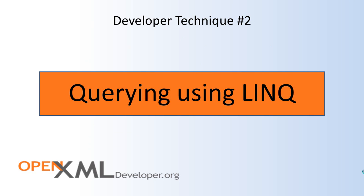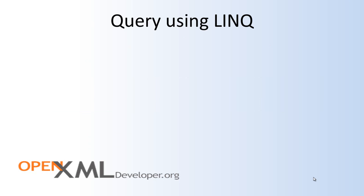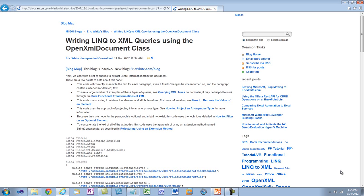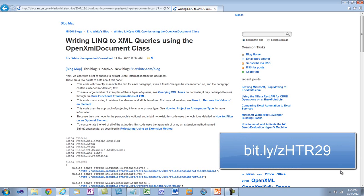Sometimes when doing OpenXML development, you don't need to modify or generate new documents — you might just be querying a document and retrieving data from it. There are two primary approaches to querying a document. The first is using LINQ to XML, and the second is using the strongly typed object model of the OpenXML SDK v2.0. I've created a number of examples showing how to use LINQ to XML to query OpenXML documents.